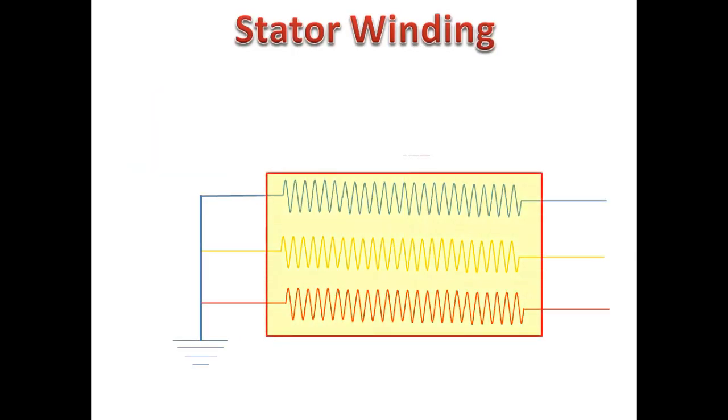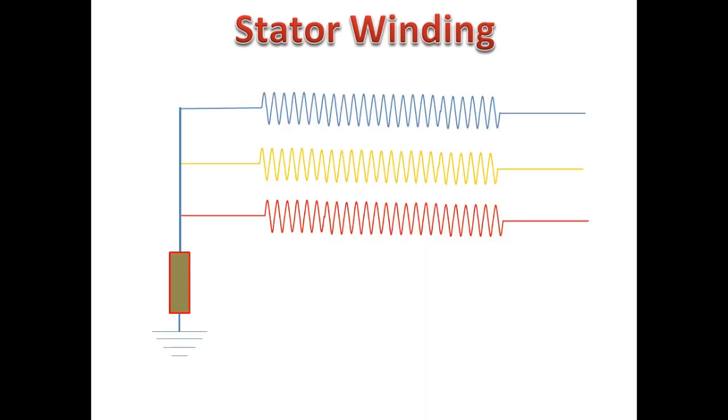Normally on a generator, to limit the phase to earth fault current, a current limiter is placed between the neutral to earth point.